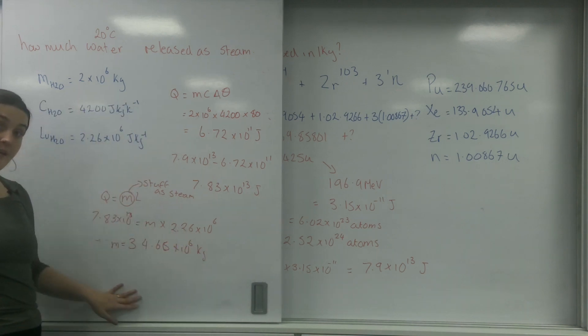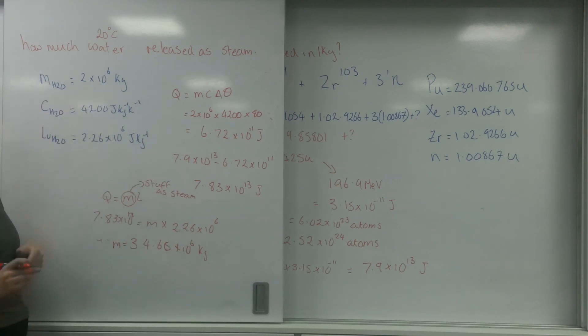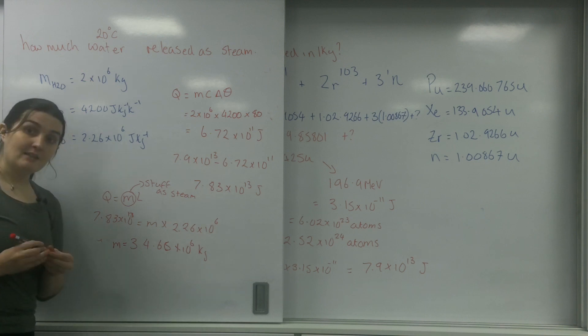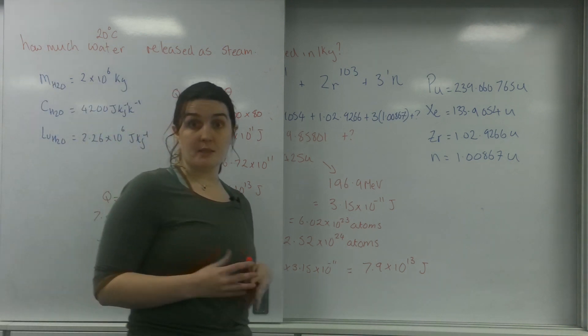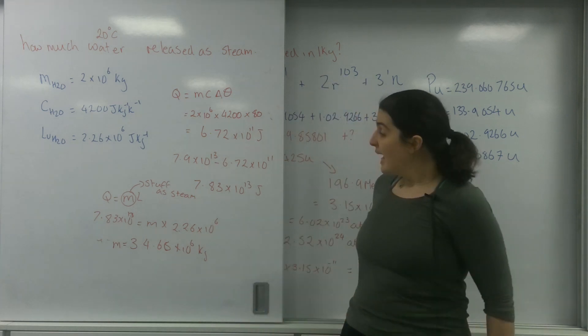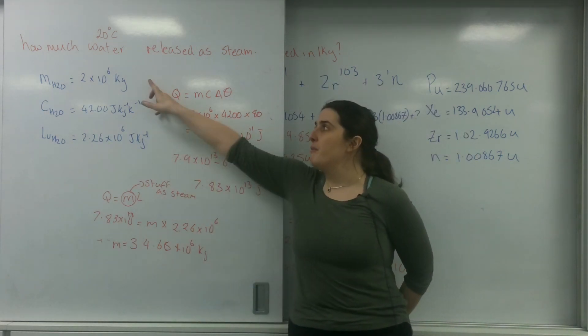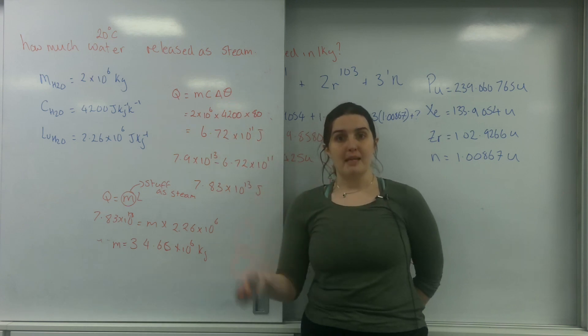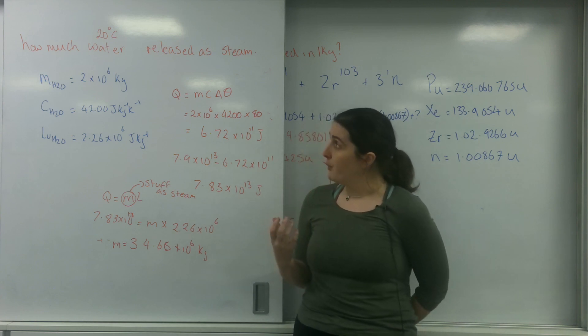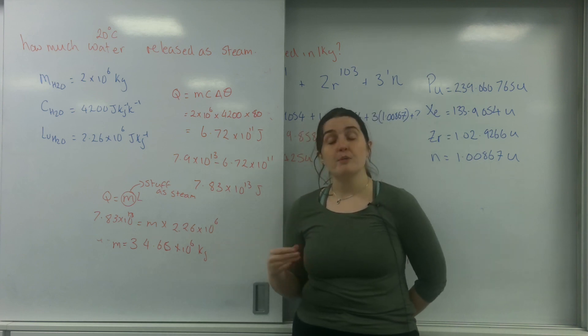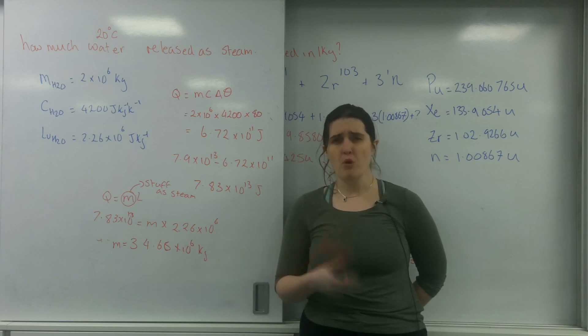As you can see, this number here is much bigger than the number I have for the mass originally. This means all the water has been turned into steam. If this number was lower than my starting number, it would mean only some of it would have been released as steam. For example, if I only found that 1.5 times 10 to the 6 kilos was given off as steam, the amount of water I have left would be 0.5 times 10 to the 6 kilos.